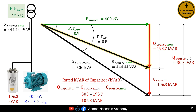So the reactive power of the capacitor Q capacitor, required to correct and improve the power factor of the source from 0.8 to 0.9, is equal to Q source old minus Q source new. Therefore, Q capacitor equals 300 kilovars minus 193.7 kilovars, which equals 106.3 kilovars.